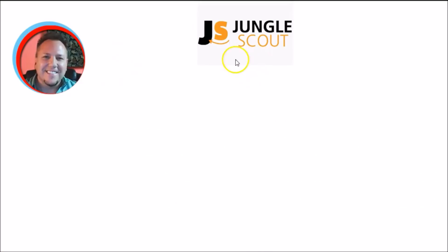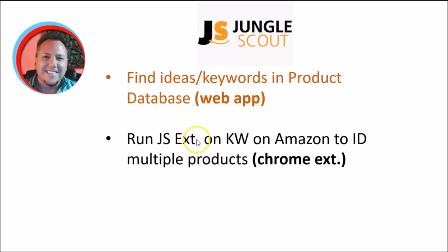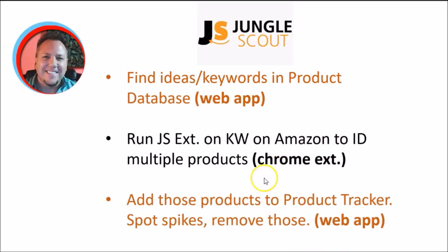Here's Jungle Scout's recommended process when using their products. First, you want to find your ideas and keywords in the product database — that's using the web app, which has several helpful tools. You'll also want to run the Jungle Scout extension in your Chrome browser on keywords while you're on the Amazon site to identify multiple products. Then, add those products to the product tracker within the web app, which helps you spot spikes and temporary trends.